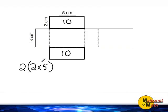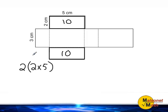And if we multiply 2 times 5, which is 10, and then double that, that would give us a total of 20 square centimeters so far. But that is the sum of the area of these two faces.